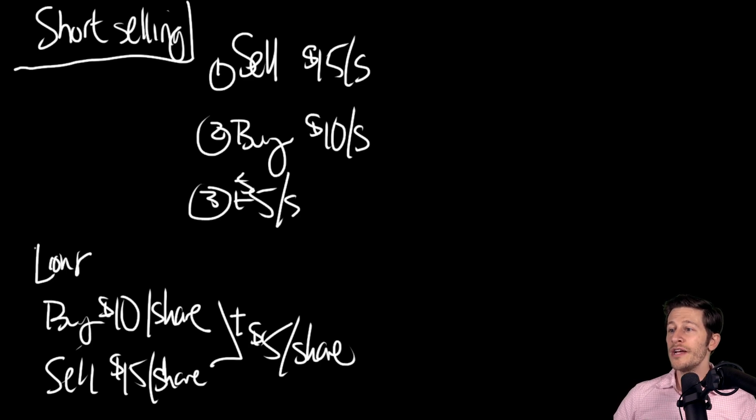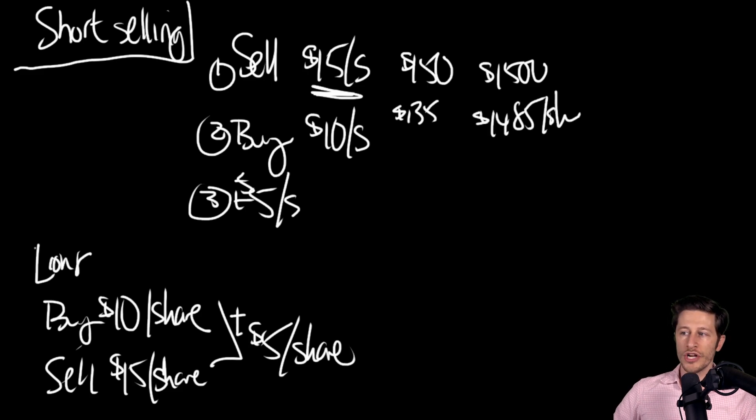Imagine a situation where you do the short sale, right? Fifteen dollars per share. And then the stock goes to one fifty per share. You've now lost one thirty five per share. Imagine the shares go to fifteen hundred dollars. You've now lost fourteen eighty five per share. I think you get the picture.